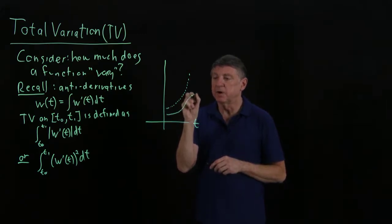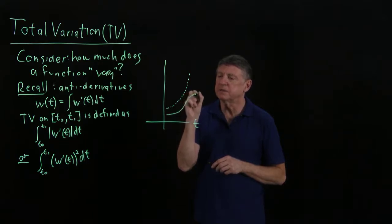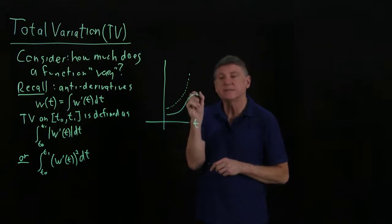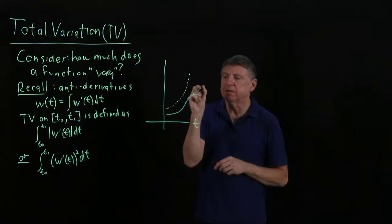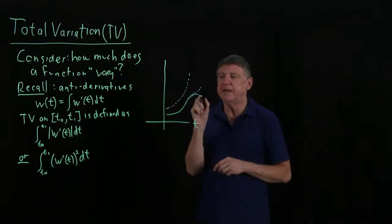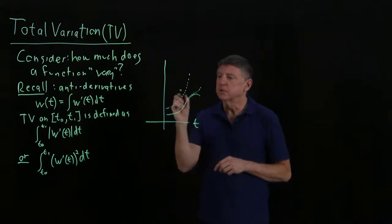So now this is still going positive, and so its total variation would continue. But if the function made a downward turn, that is, if its derivative went negative, then we would say that it's varying from how it would behave if its derivative was always positive.